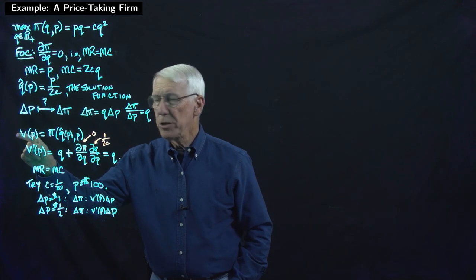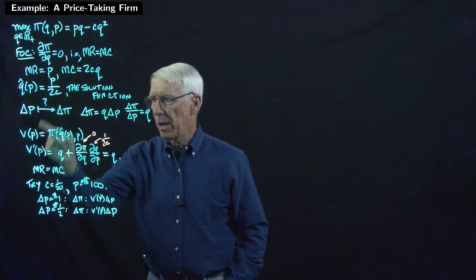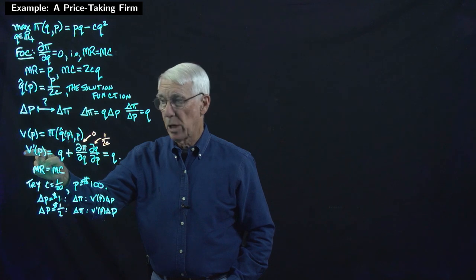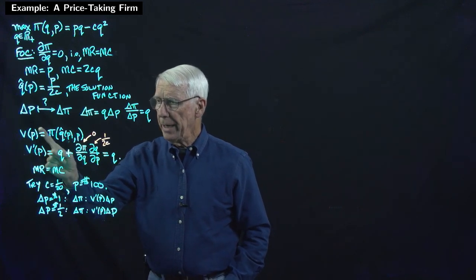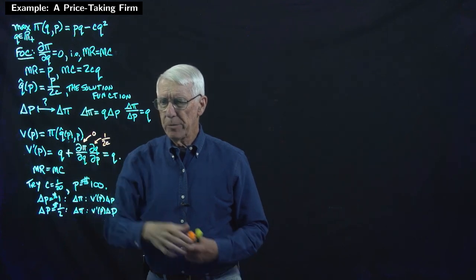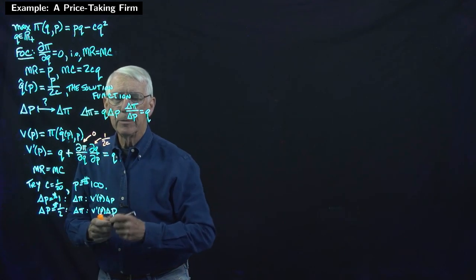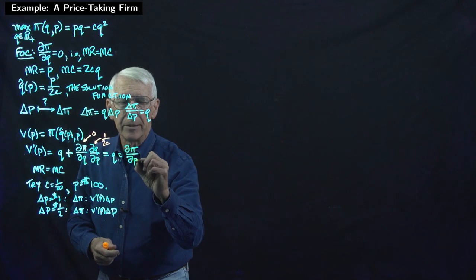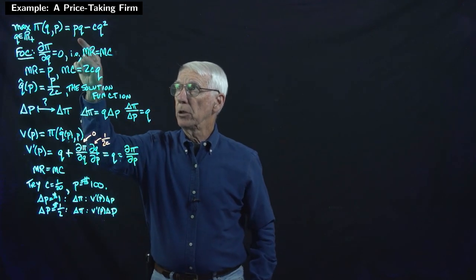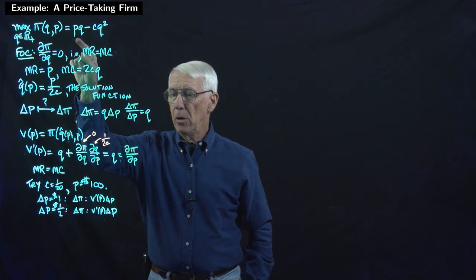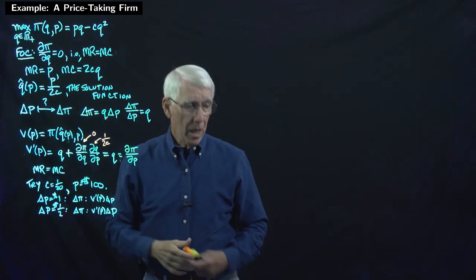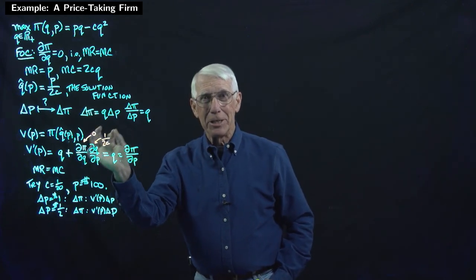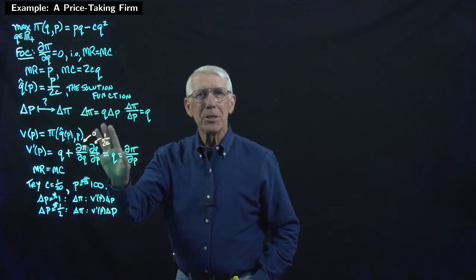The key here is that we're using the value function to tell us how profit responds to a change in a parameter, and that derivative turned out to be Q — exactly the partial derivative of pi with respect to P. Just the partial derivative of pi with respect to P, which is Q. So that is the envelope theorem in a nutshell, in the simplest possible example.